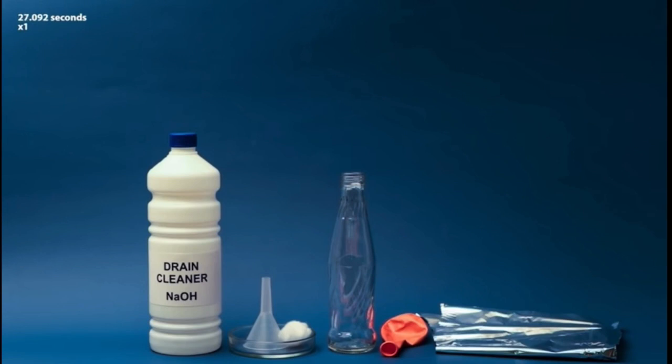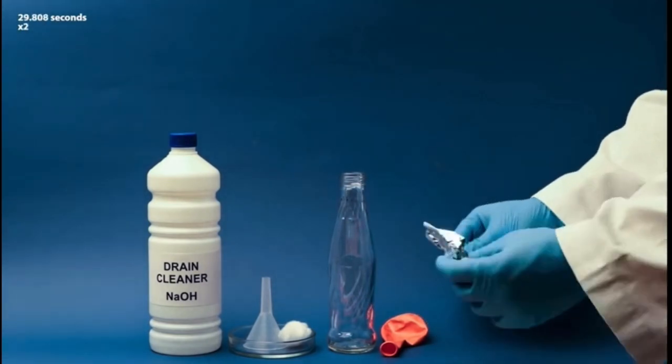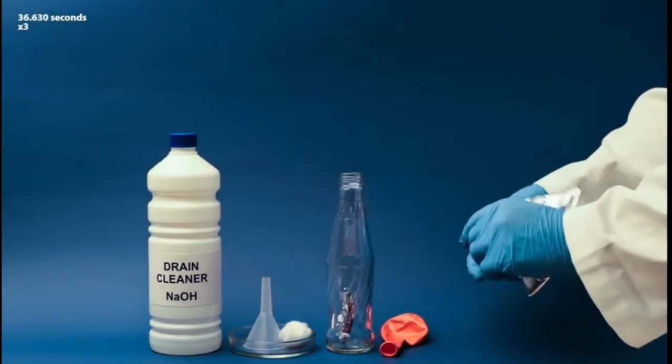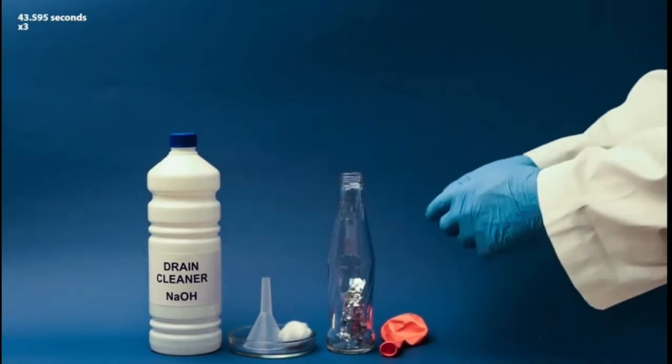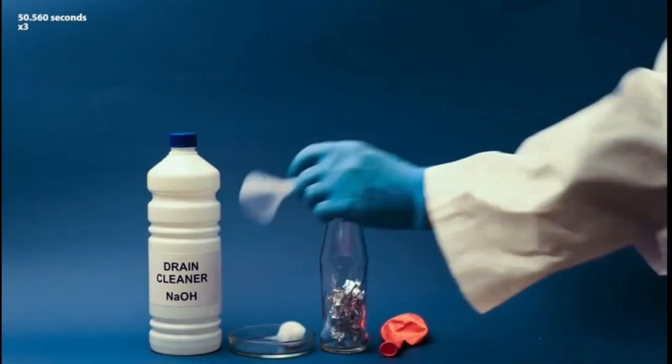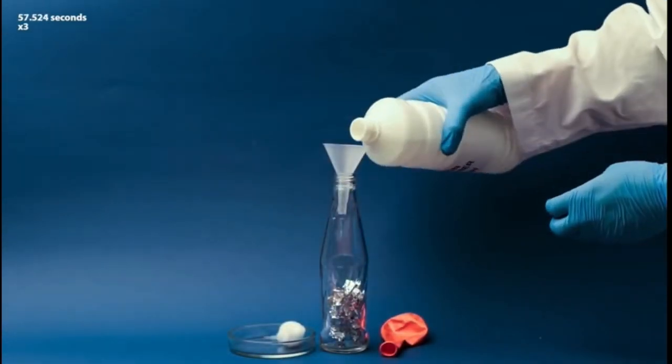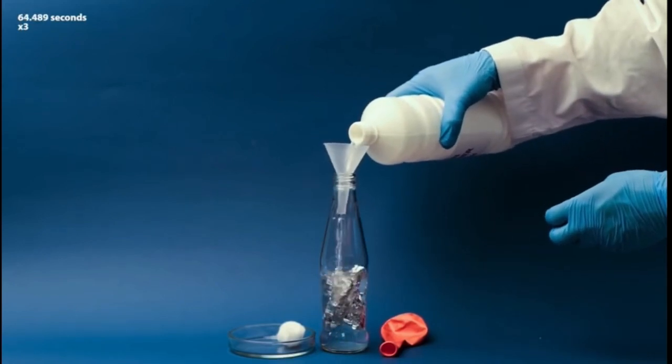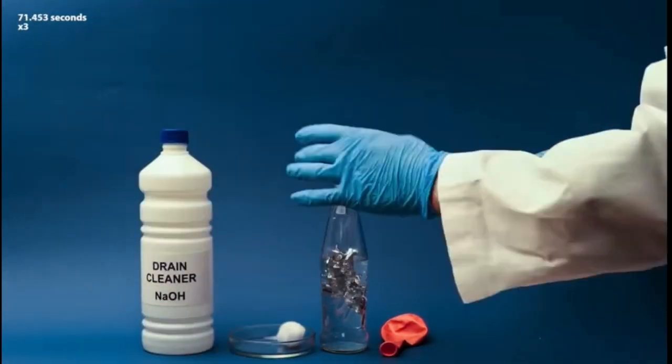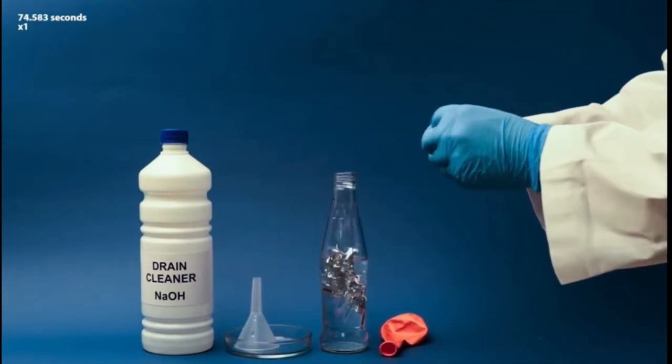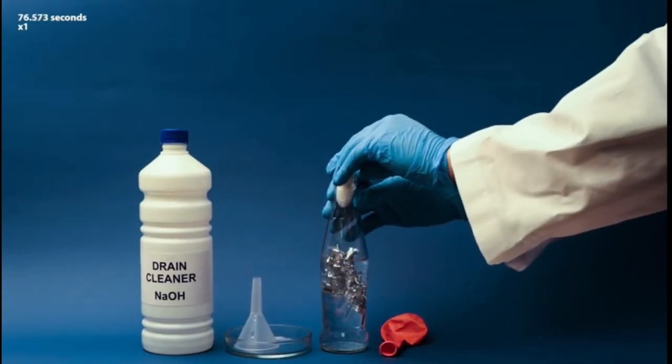You can make hydrogen at home. All you need is aluminum foil and a drain cleaner. Don't use too much aluminum foil, because the reaction produces a lot of heat. The cotton wool piece is useful to prevent reagent drops from entering the balloon.